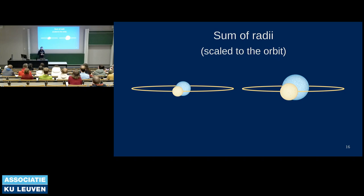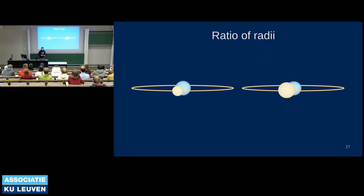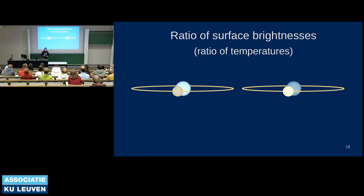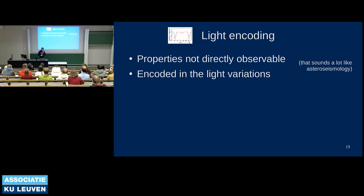The scaled sum of radii is an intrinsic property — what we actually measure in eclipsing binaries is not the absolute stellar sizes but the sizes relative to the orbit. We can also obtain the ratio of the radii, telling us which star is larger. Finally, the ratio of surface brightnesses is directly related to stellar temperatures and tells us which of the two stars is brighter per unit surface area.